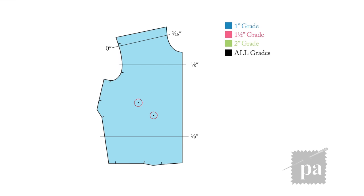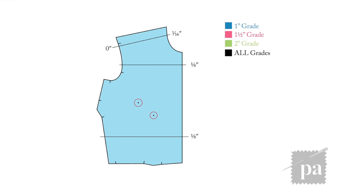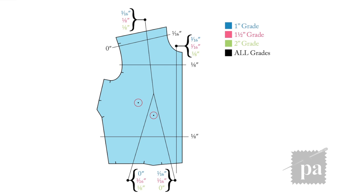For the one inch grade, the length is the same. The width is going to be one sixteenth at the front, one sixteenth at the shoulder, and you'll notice at the bottom the dart gets split up — it gets one sixteenth at the front and zero on the side. For the side grade you're going to get an eighth. For the two inch grade, again the length is the same. The width is going to be at the neck one eighth, at the shoulder one eighth, and at the bottom it gets split up into zero at the front and an eighth at the side. For the side grade you're going to get a quarter.